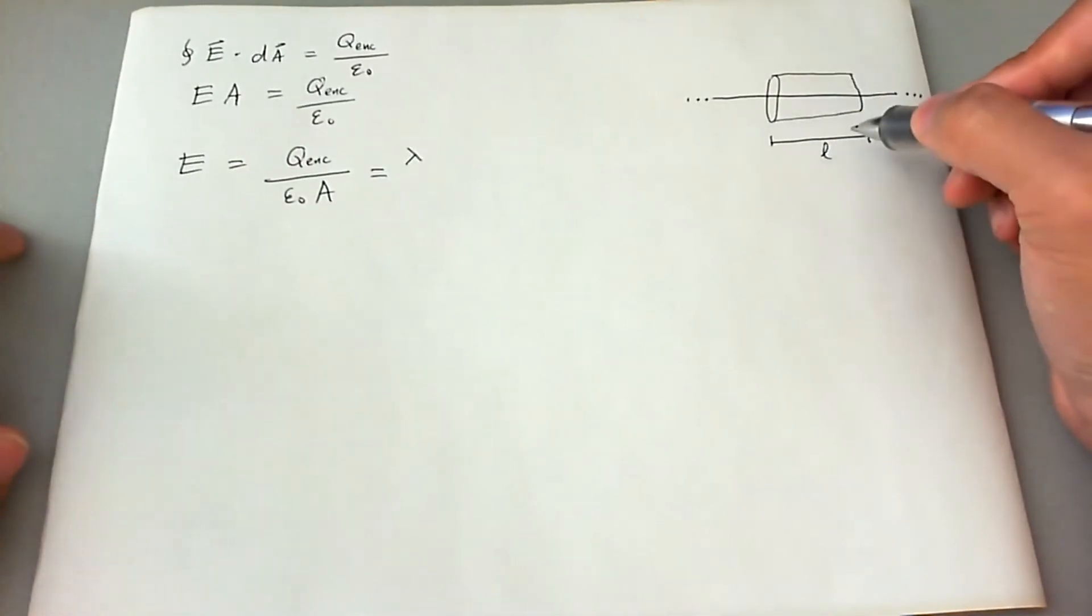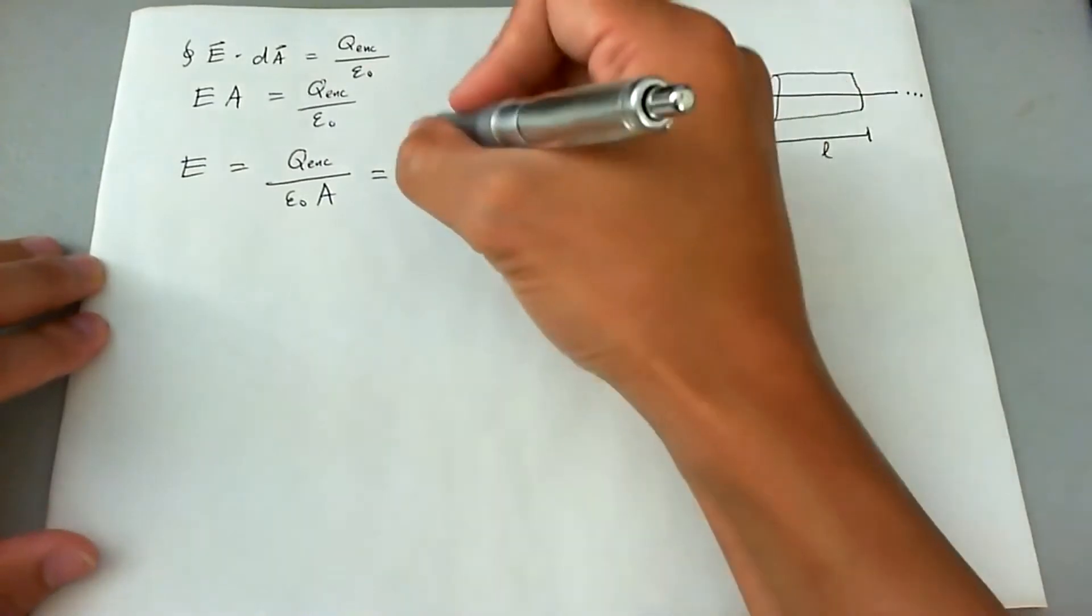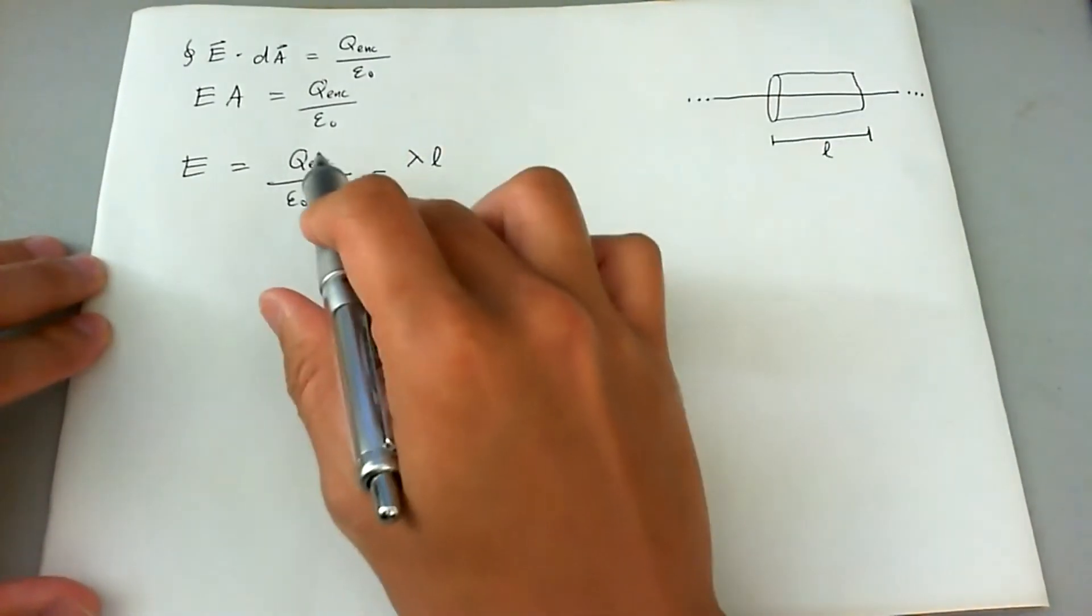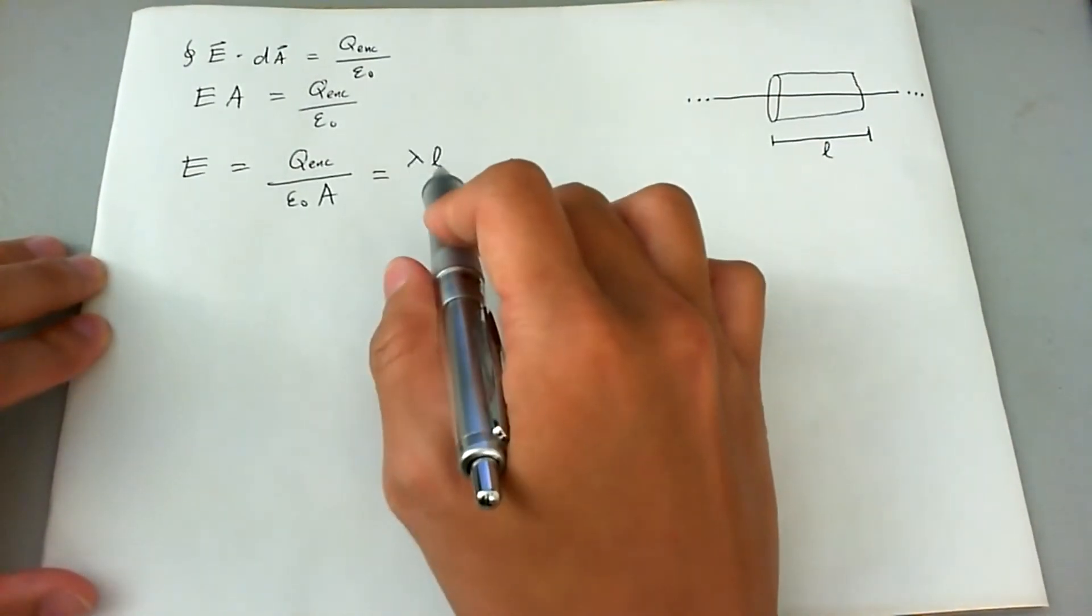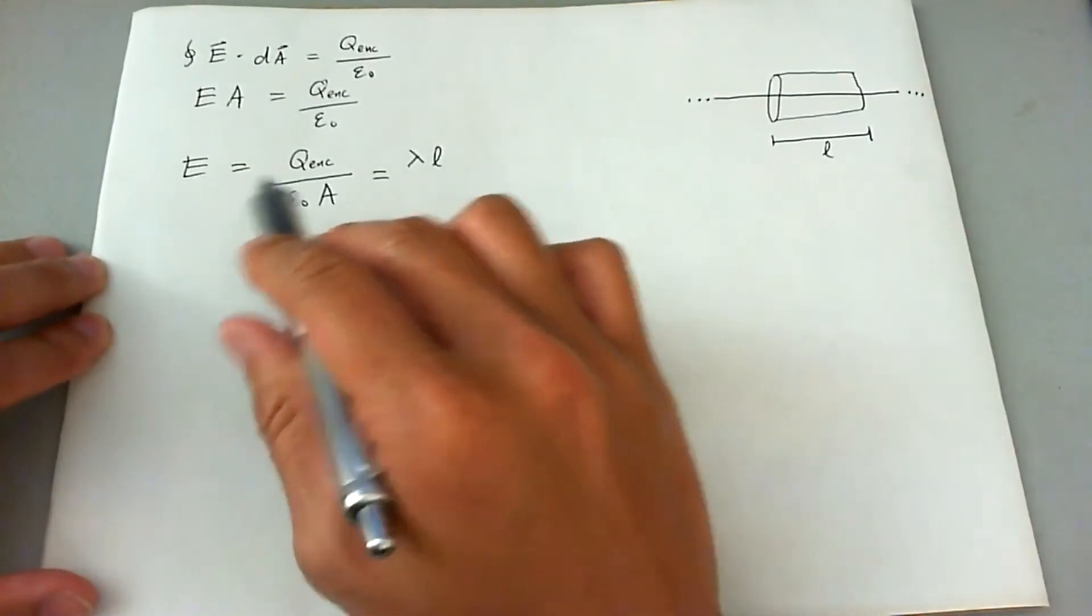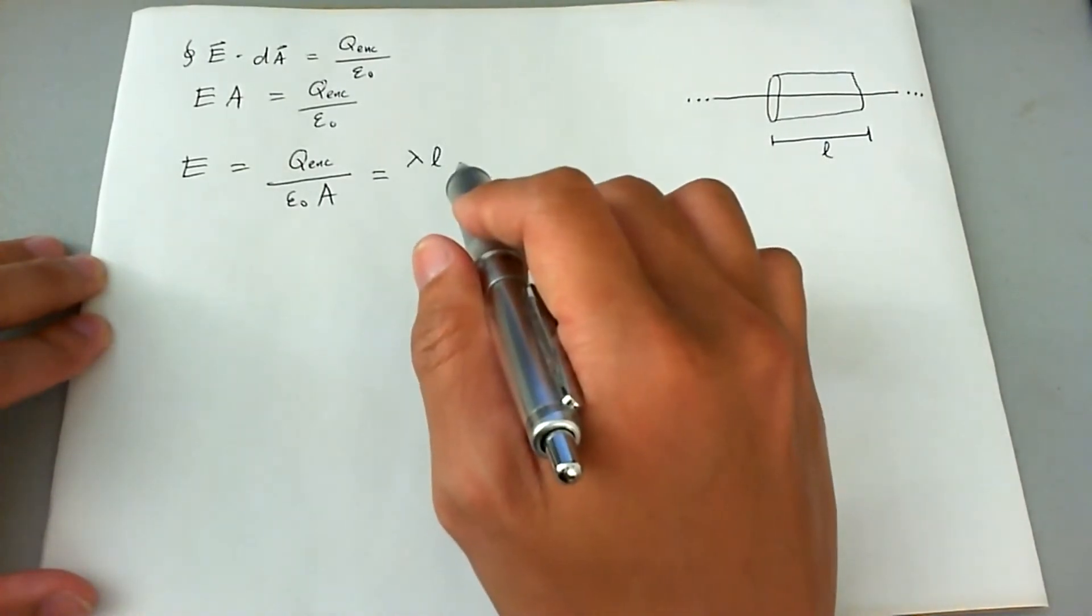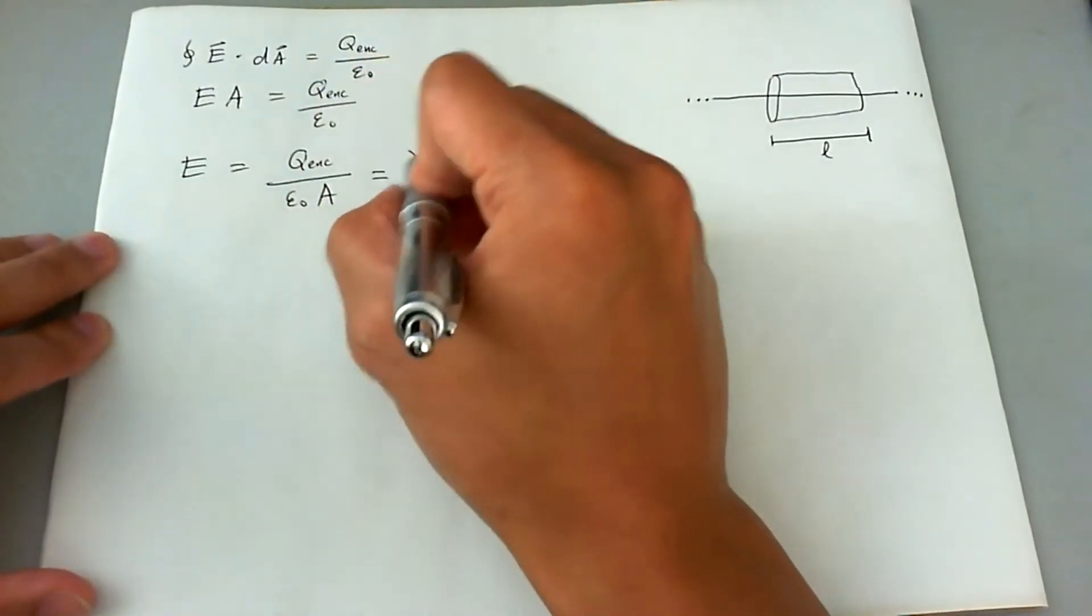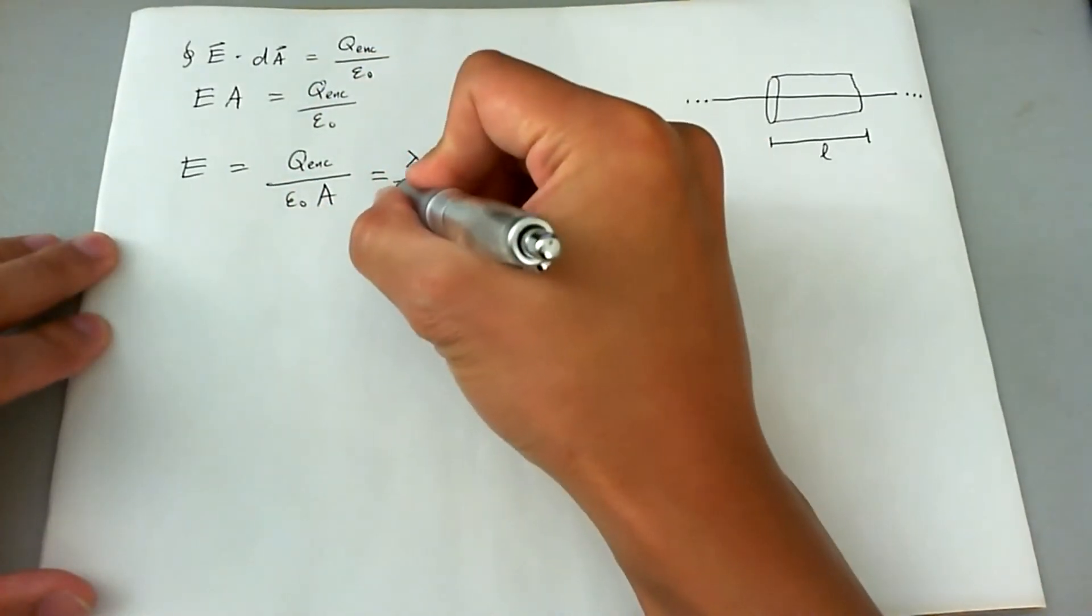And of course, this is an arbitrary Gaussian curve. So this L that we're going to invoke here for Q is not going to remain in the final equation for E. We're going to have to get rid of it eventually. So Q is lambda L, and we're going to divide it by epsilon naught.